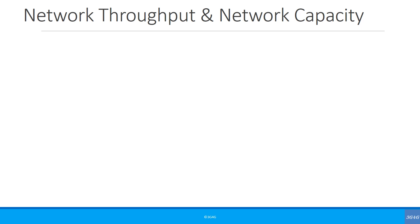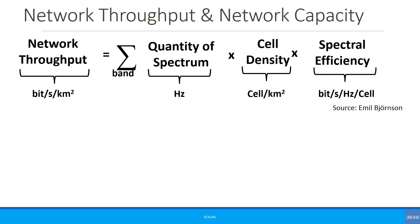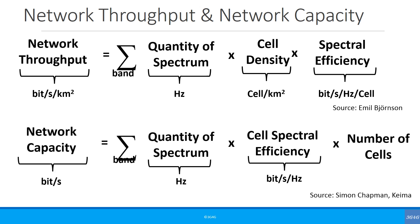Network throughput and network capacity are slightly related. Network throughput is the sum across all different bands, where for each band you multiply the quantity of spectrum in Hz by the cell density in cells per km², then multiply by the spectral efficiency in bits per second per Hz per cell. Network capacity is similarly the sum across all bands, multiplying the quantity of spectrum by the cell spectral efficiency in bits per second per Hz, then by the number of cells. Different people use network throughput or network capacity depending on what they are trying to show.